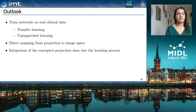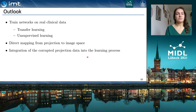It should also be investigated whether a direct mapping from the projection to the image domain could enhance reconstruction results even further. Additionally, an integration of the cross-projection data into the learning process can help the generator to get more information about the metal trace and better fill in the missing data.